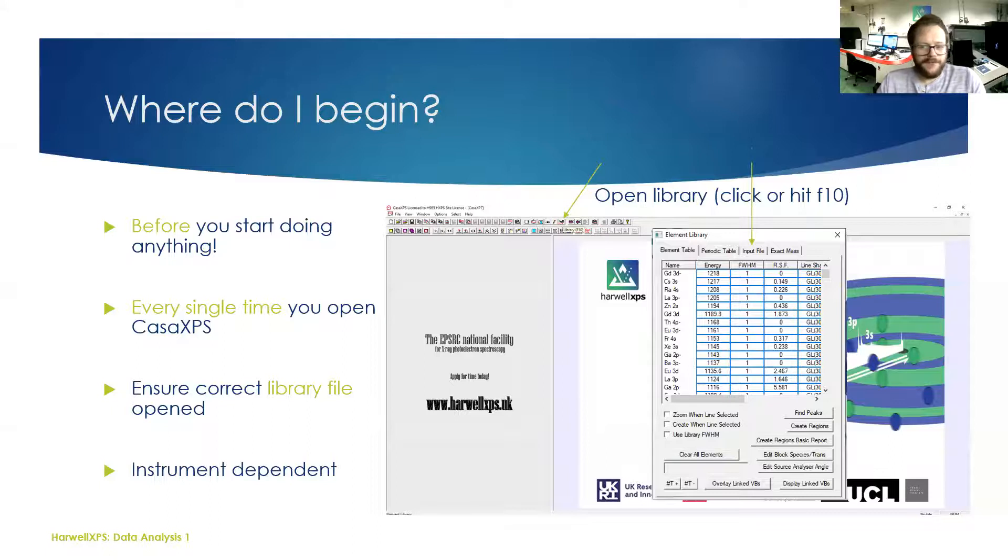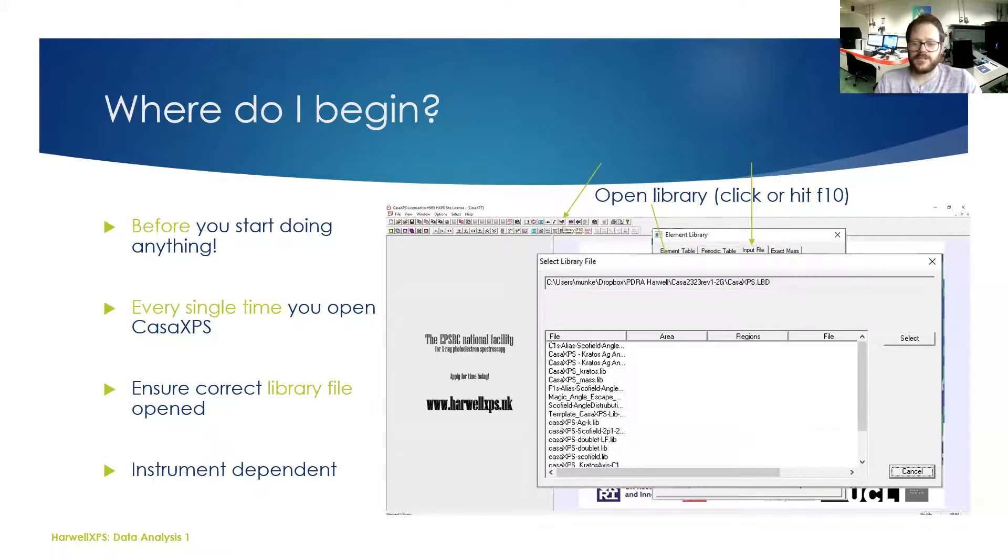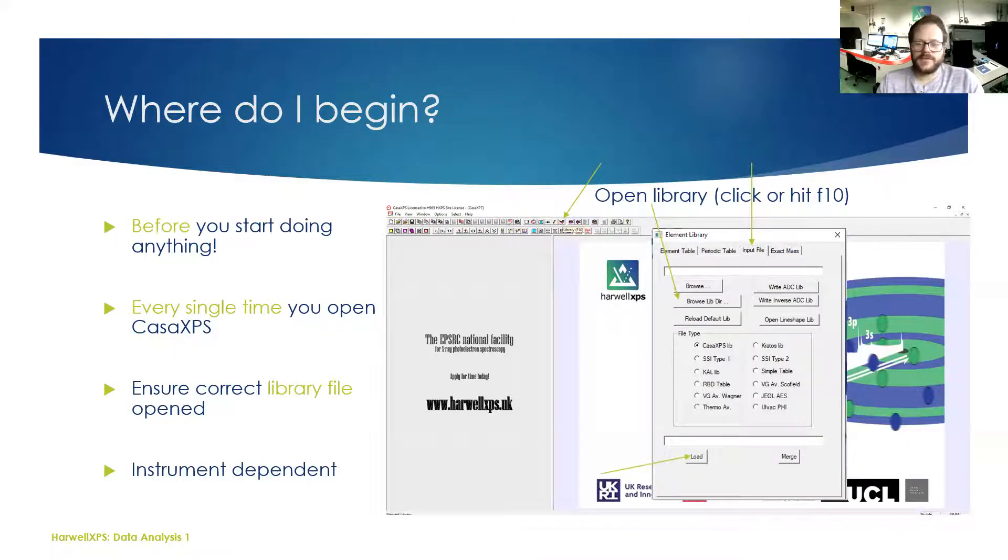Go to the library, where we've got the arrow there, or hit F10, and you're going to want to go to Input File. In that tab there's an option called Browse Library Directory, and then you just need to select which library you want. For example, if we were using a Kratos instrument, we would open up CasaXPS_Kratos.lib. Then you can just click select and hit load. You do need to do this every single time you open up the software.